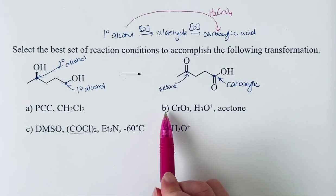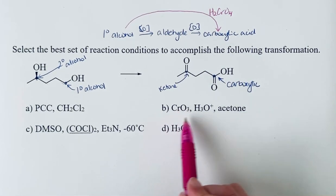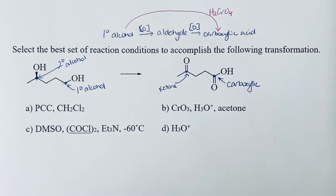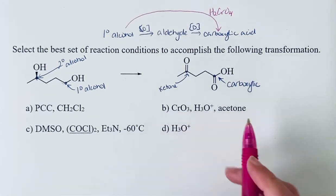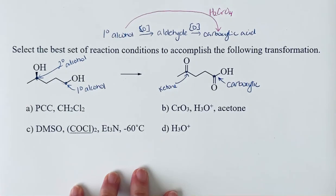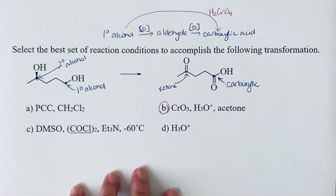Option B here, this chromium trioxide and aqueous acid and acetone, that will combine to give you chromic acid. So this is the option that we're looking at.